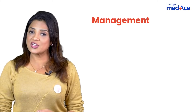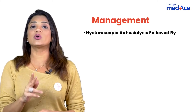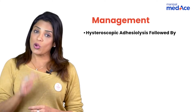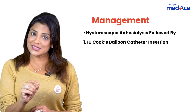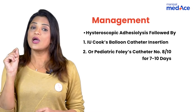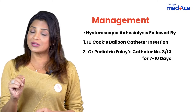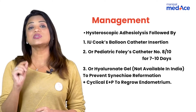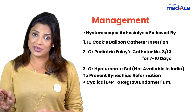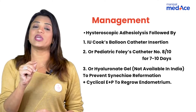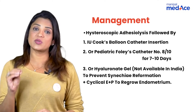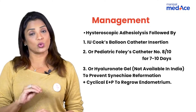How do you manage Asherman's syndrome? First, you have to do hysteroscopic adhesiolysis using scissors, followed by either putting a Foley's catheter inside — which is a pediatric catheter of size 8 or 10 — or you can use a Cook's balloon catheter, or hyaluronidase gel, though hyaluronidase gel is not available in India. If you are putting a catheter, you put it for 8 to 10 days, followed by giving cyclical estrogen plus progesterone for the endometrium to grow.